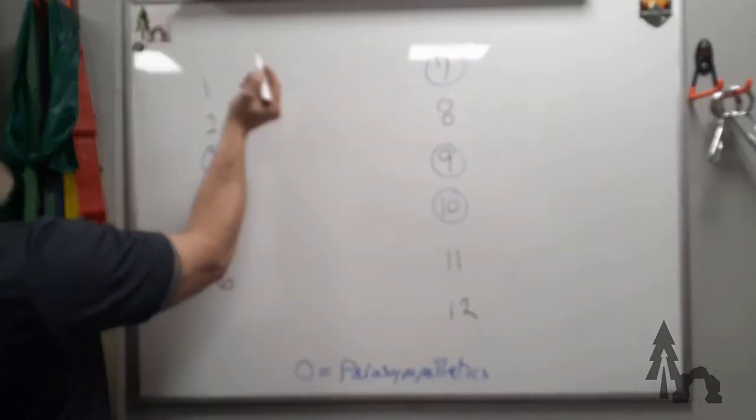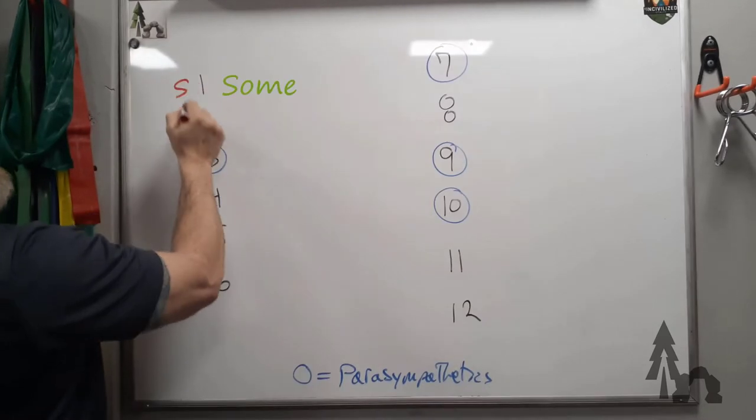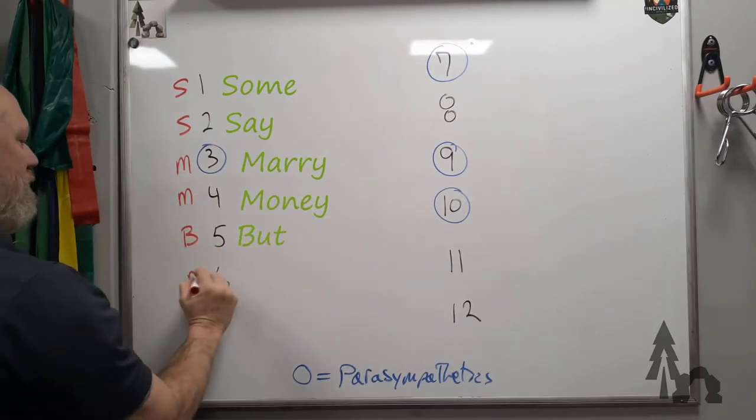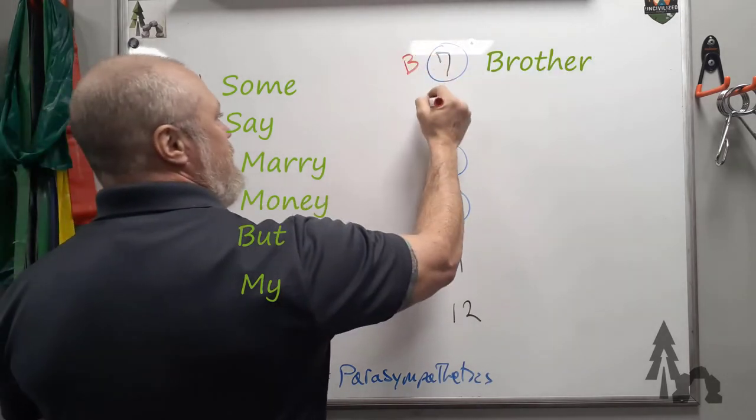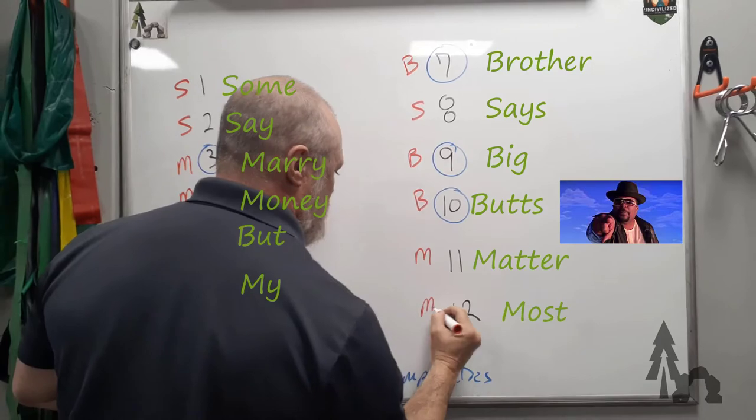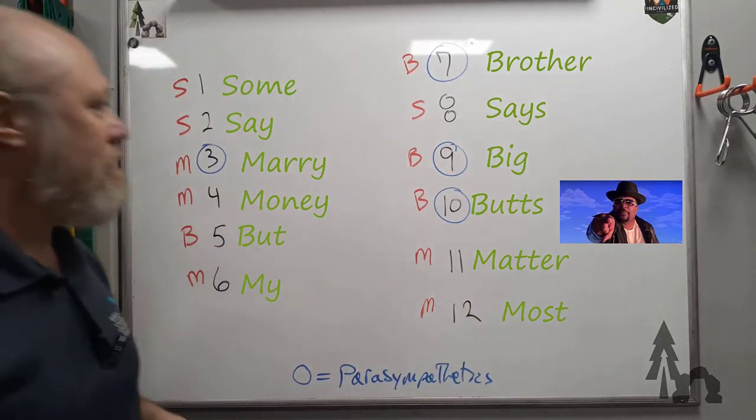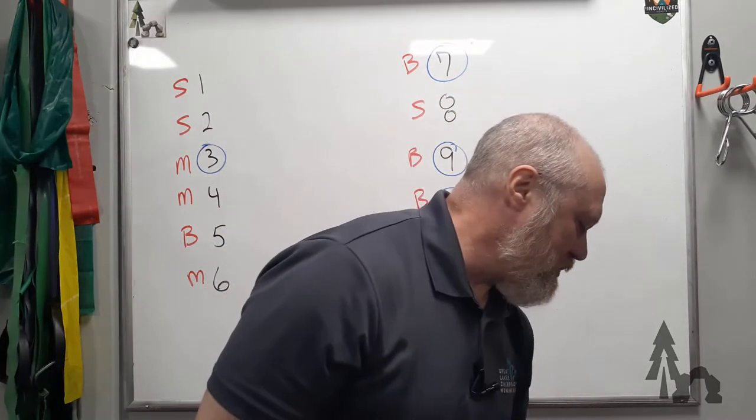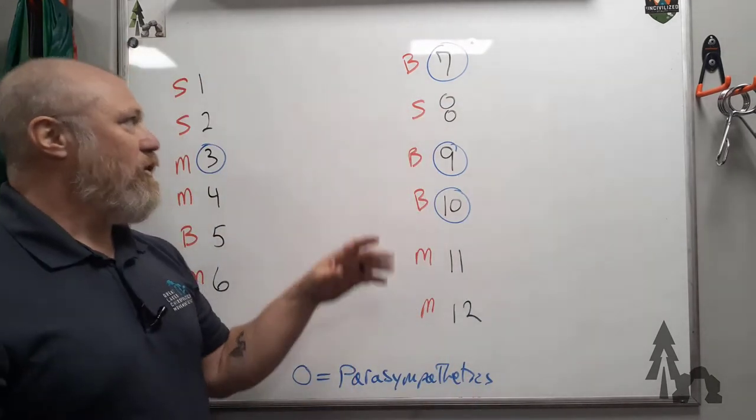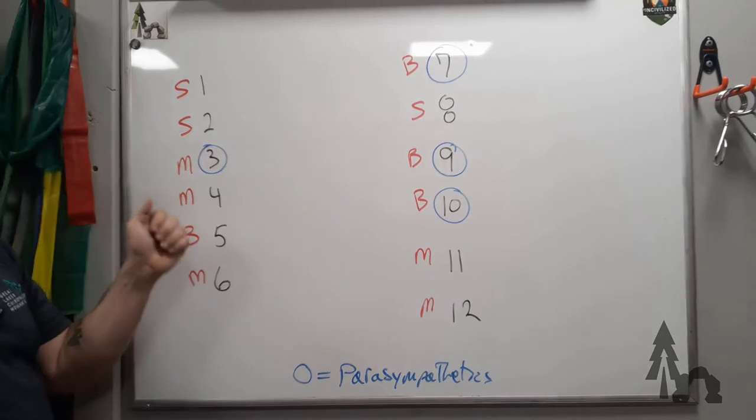The next little trick is to go next to your numbers and do this: Some say Mary, money, but my brother says big butts matter most. Sexist, sure, but it's the easiest way to remember it. You can separate out big brains, big boobs, whatever you want—I've heard all kinds of them.